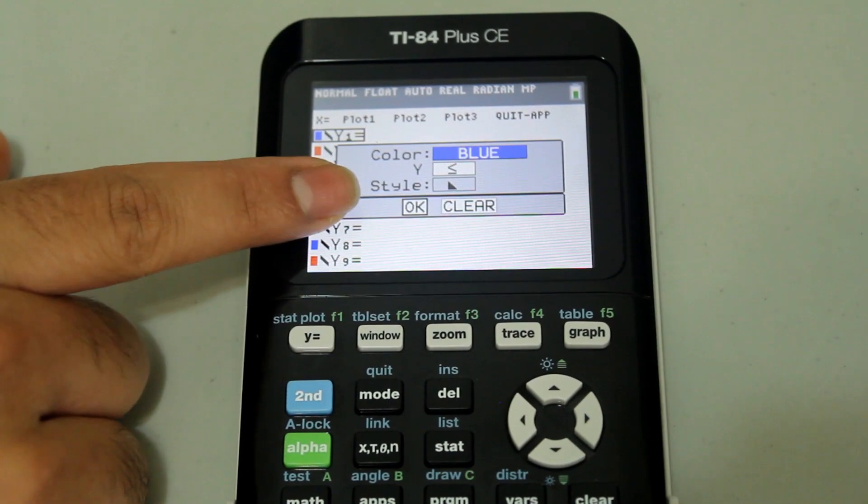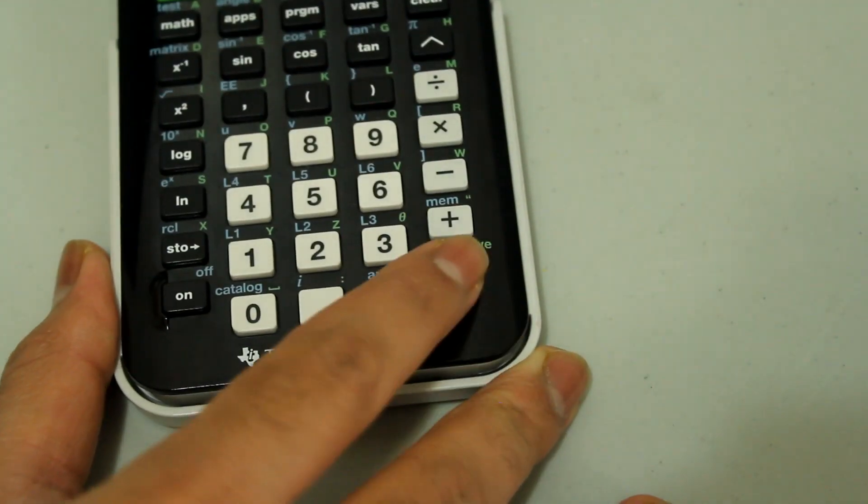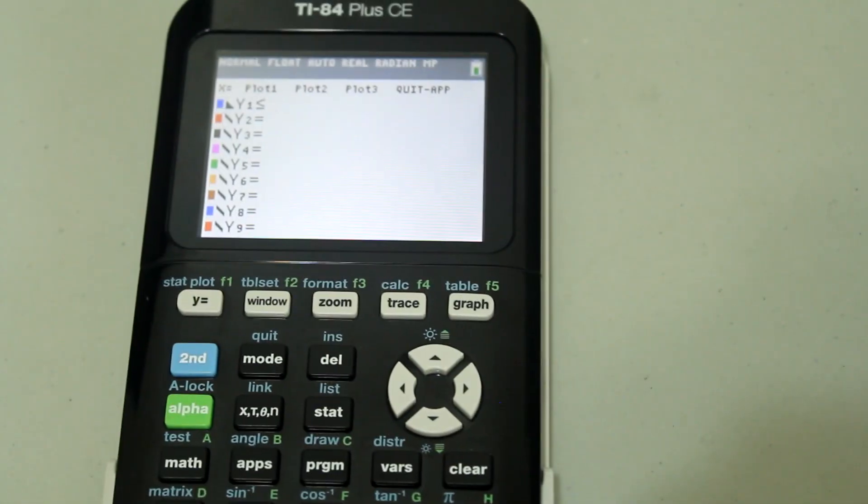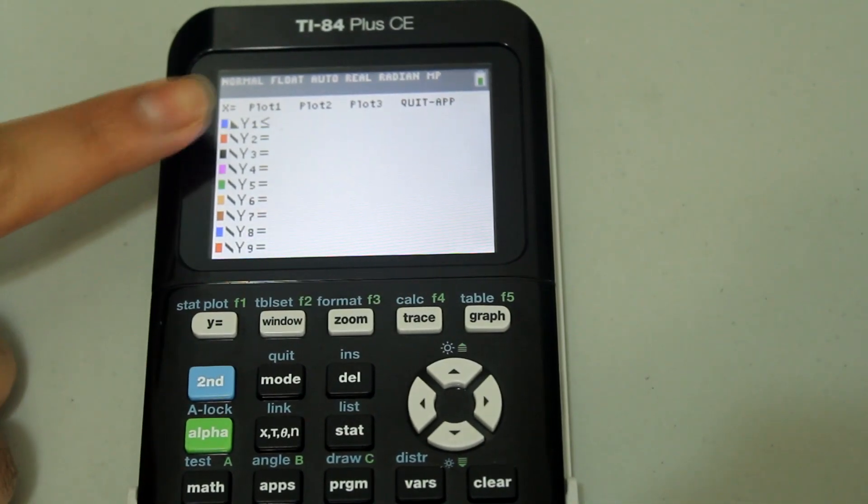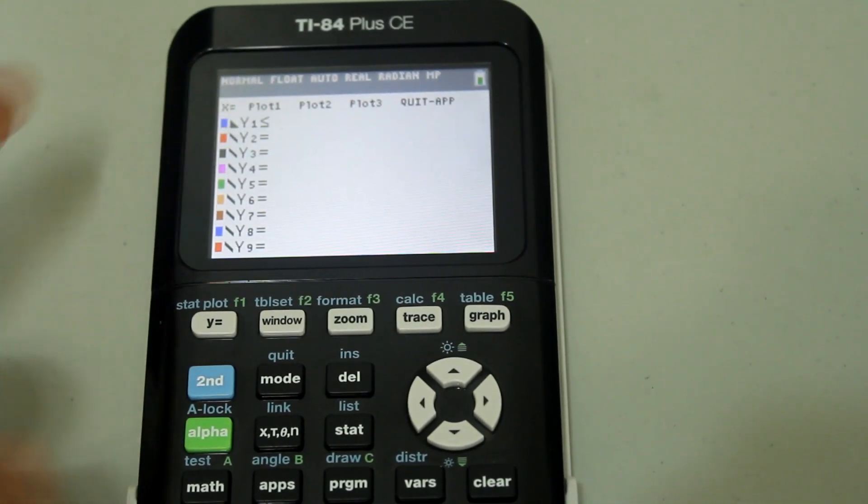And after that, hit enter and then the OK will have a black box around it. Hit enter again. And now you see that the equal sign has changed to less than or equal to.